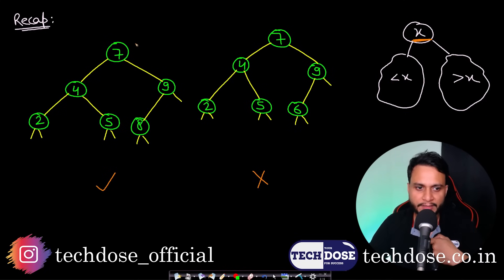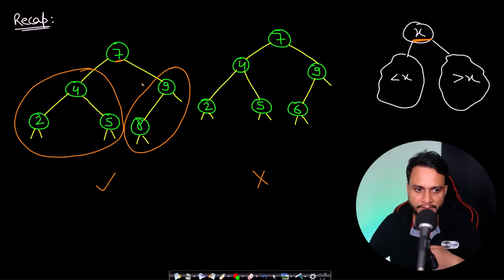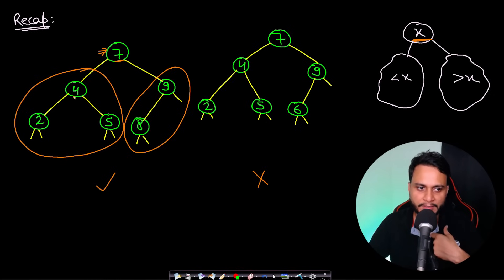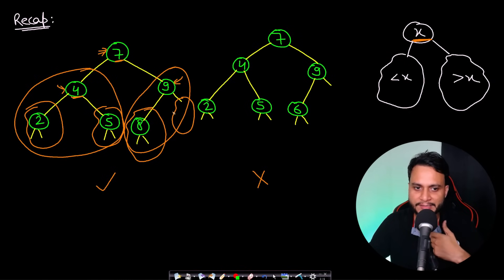Let's check if the first tree is a BST. If the root node is 7, all elements in the left subtree must be less than 7 and all elements in the right subtree must be greater than 7 — this is true. We must recursively check for all internal nodes. Checking node 4: all elements left must be less than 4 and right must be greater than 4 — also true. Leaf nodes don't need checking. Checking node 9: elements left less than 9 and right greater than 9 — true as well. So this tree is a BST.